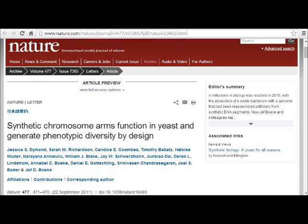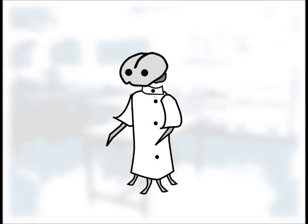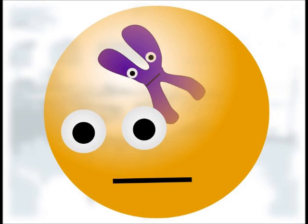In previous work, they managed to design and engineer one arm of the yeast chromosome. Here, they attempted to make a synthetic version of an entire yeast chromosome, but just one. They started with the smallest yeast chromosome, which is chromosome 3, the sex chromosome.